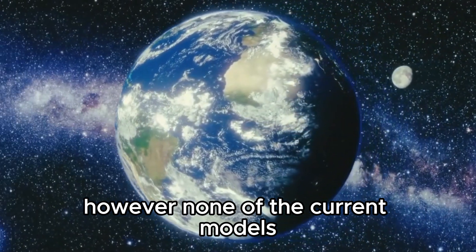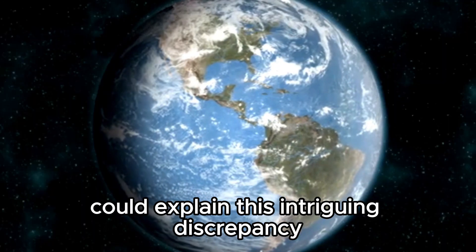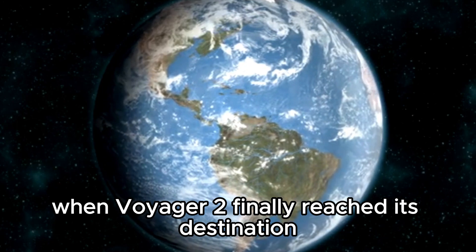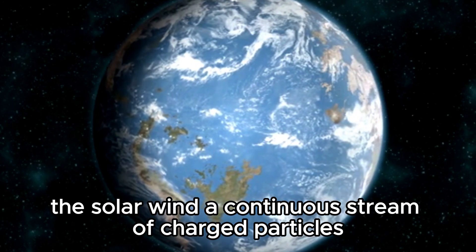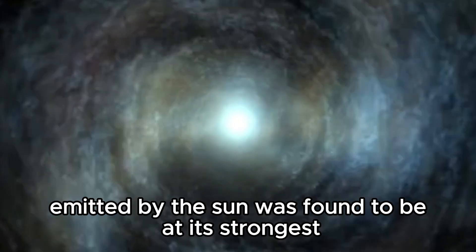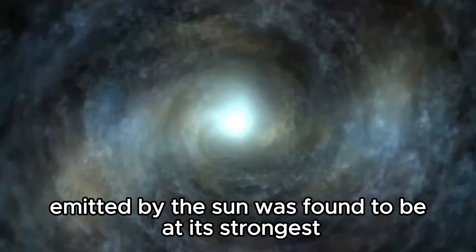However, none of the current models could explain this intriguing discrepancy. When Voyager 2 finally reached its destination, the solar wind, a continuous stream of charged particles emitted by the Sun, was found to be at its strongest.